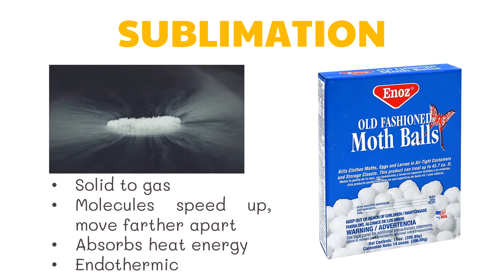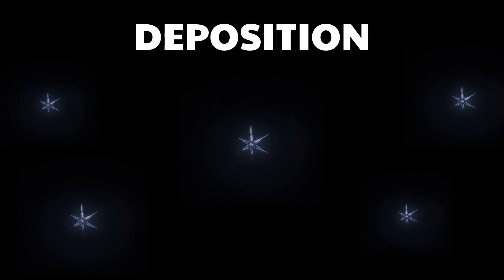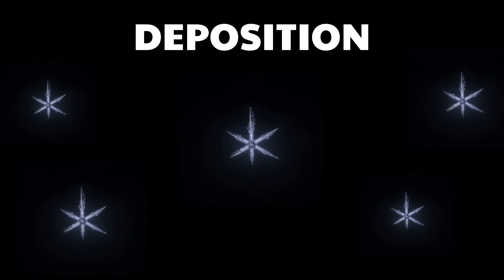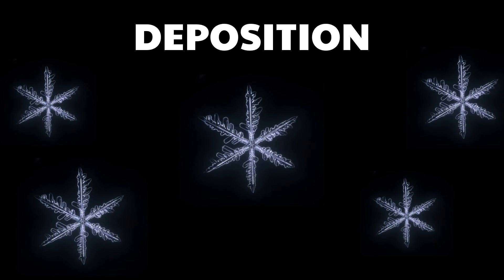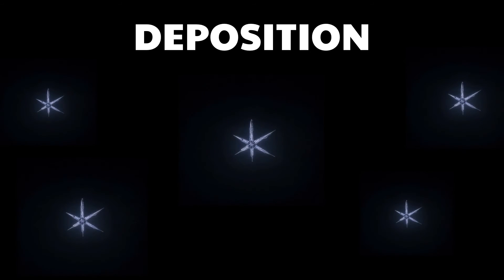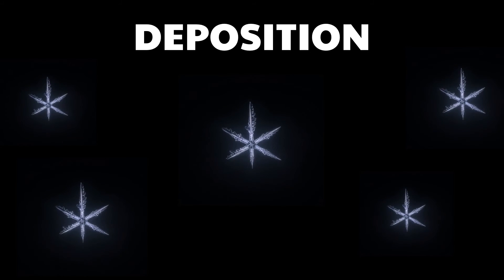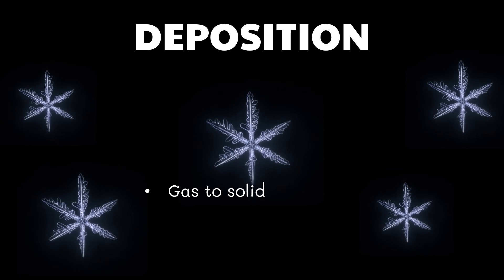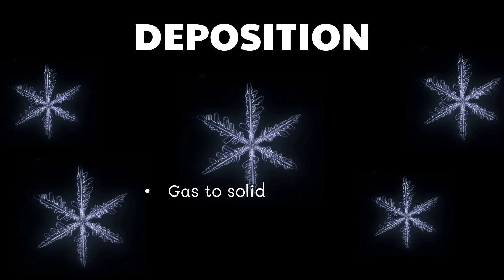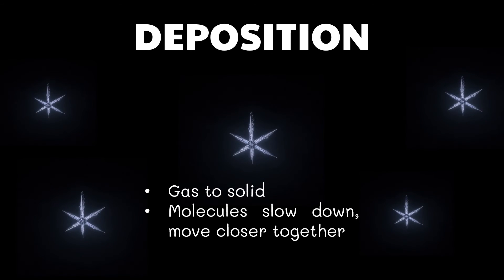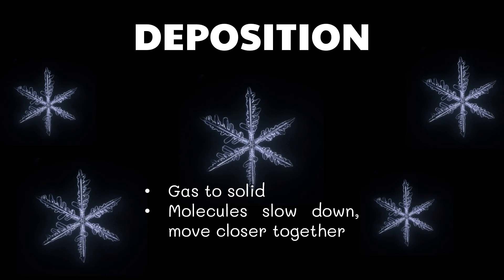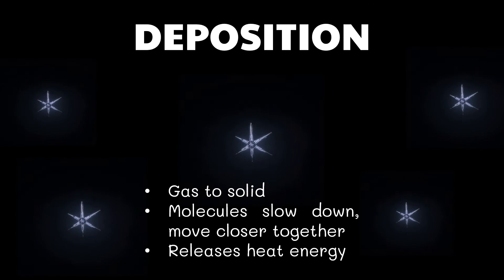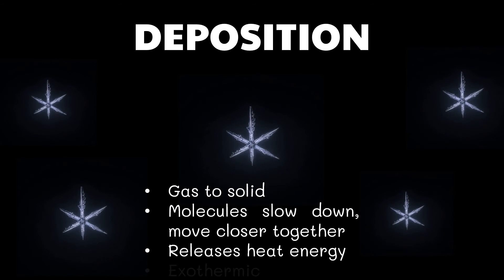Dry ice, or solid carbon dioxide, has a very high rate of sublimation. When water vapor comes in contact with a cold glass window in winter, it forms a solid deposit on the window glass called frost. Deposition is the process by which a substance changes from gas to a solid without first changing into the liquid phase. Deposition is the reverse of sublimation. When water vapor high up in the air changes directly into solid ice crystals, you get snowflakes. Heat energy is released as the crystals form, so it is exothermic.